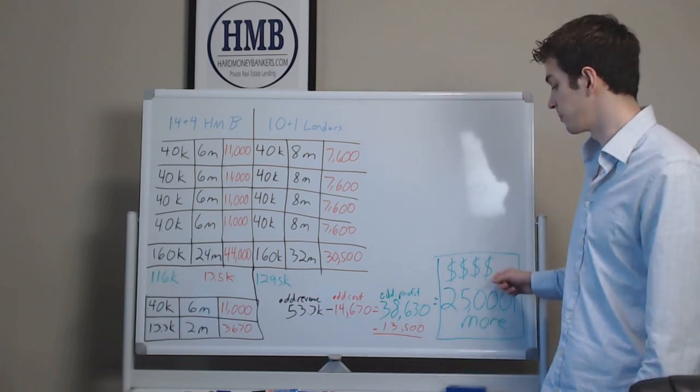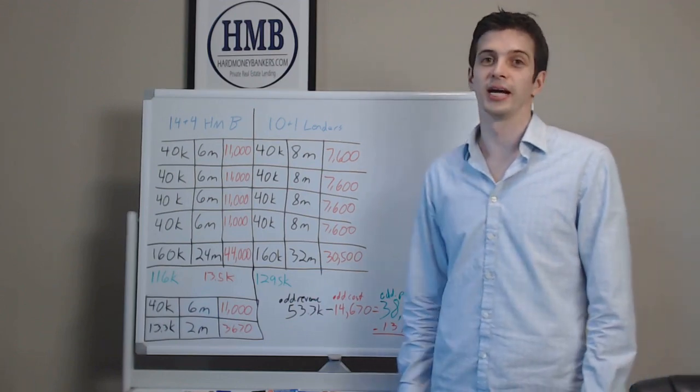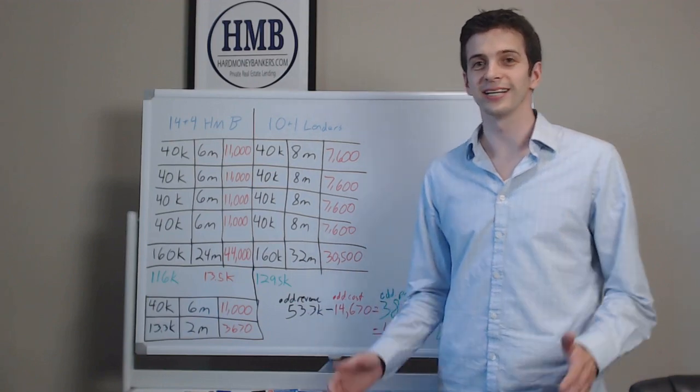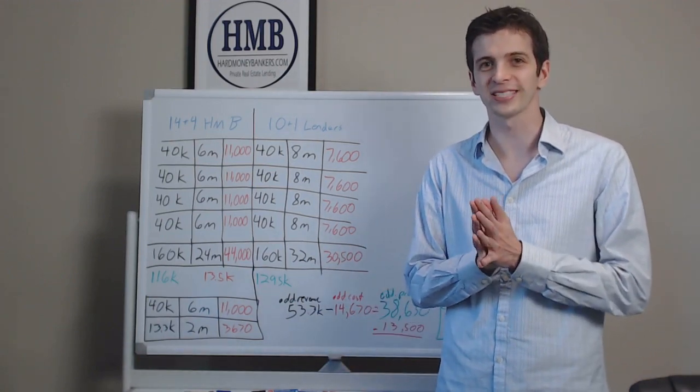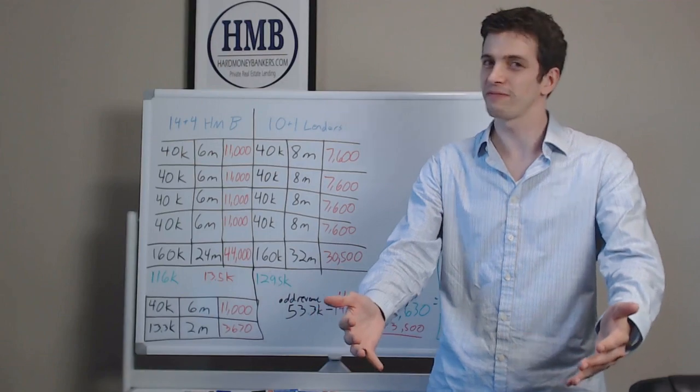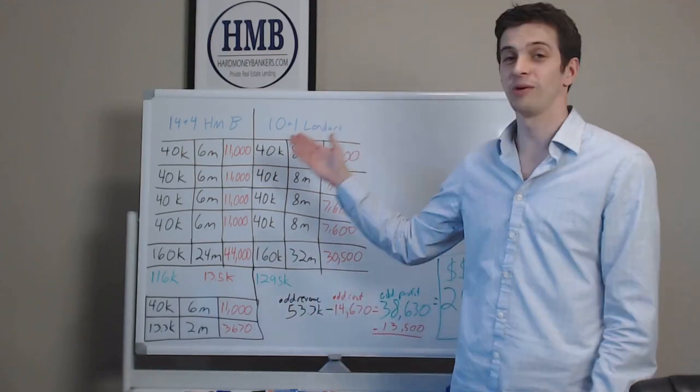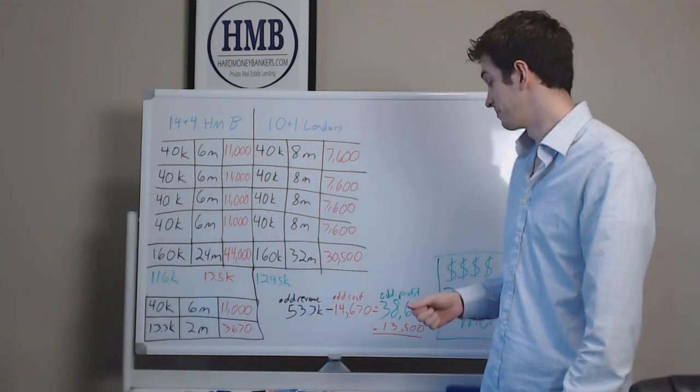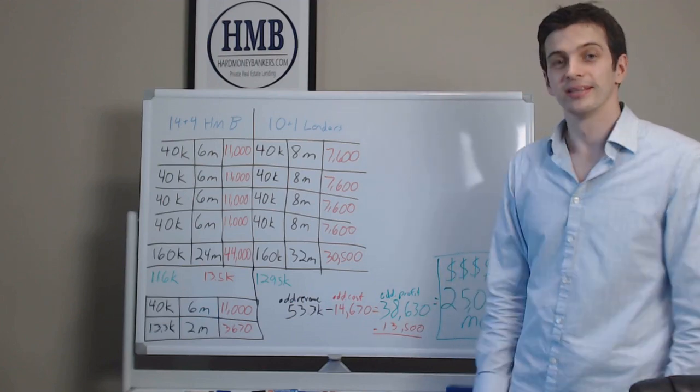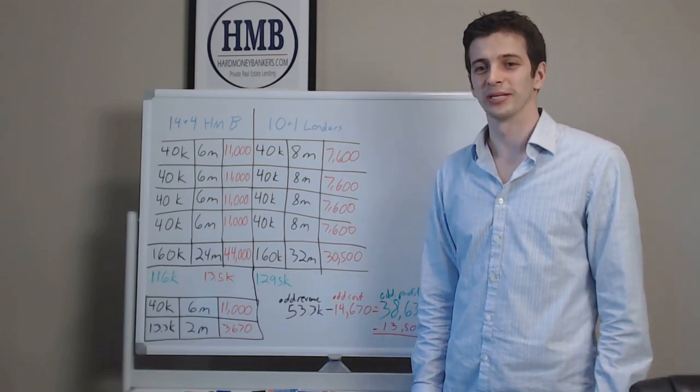So keep it in mind, if you want to make more money, use a fast lender. That's what we're here for. So that's it. I said it. Hard money bankers, 14 in 4 rates can actually make you 25 grand more than a 10 in 1 lender, which is crazy, but it's possible. So thanks for watching and looking forward to doing deals with you.